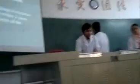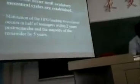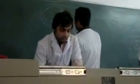It does not occur until ovulatory menstrual cycles are established. It occurs around the time of puberty. The maturation of the hypothalamic-ovarian axis leading to ovulation occurs in half of teenagers within 2 years post-menarche and within 5 years. So the ovulatory cycle begins within 2 to 5 years of the first menstrual period.